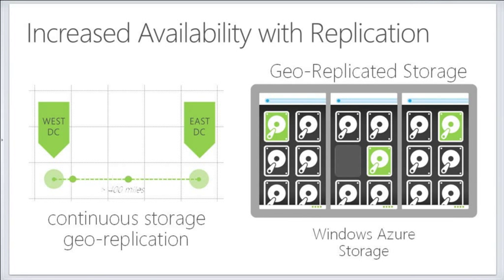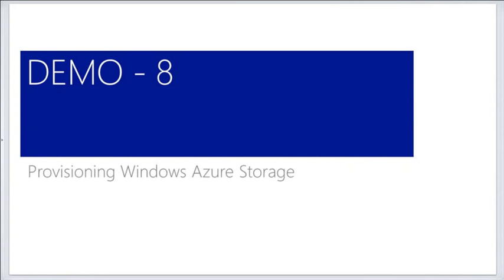One thing to pay attention to: if you start your storage as locally redundant storage and then turn on geographical storage, you will be charged for the bandwidth as that replicates. But if geo-replication is on by default from the day you start it, you don't get that charge. So let's go look at provisioning some storage and what that takes — you will be doing this in just a few minutes.